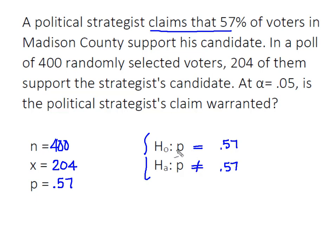In other words, he's claiming that the proportion is equal to 57%. In order to overturn his belief, I would be willing to accept data that proved it either to be higher or lower. The other thing to know is that the equal-to had to go in H₀, because equal-to is never going to appear in an alternative hypothesis.